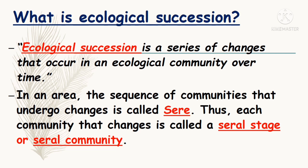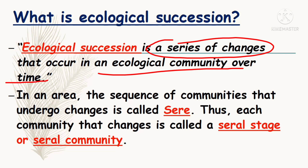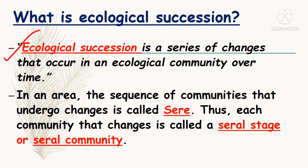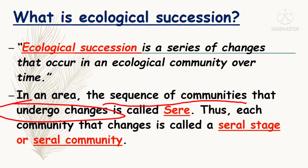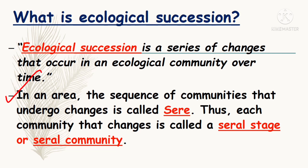Ecological succession simply means a series of changes. If there is a small change in the ecological community or something else, it is called ecological succession. And if there is a sequence of communities — meaning an interacting group of various species in a common location — if there is a group of species in a common location, like a group of forests, or a group of plants, or a group of animals, and if there is a group of changes under any process, we would call it a SERE. The sequence of communities that undergo changes in an area is called a SERE.